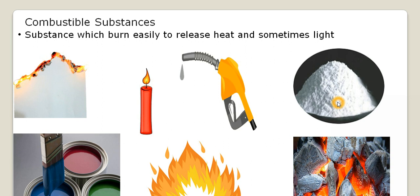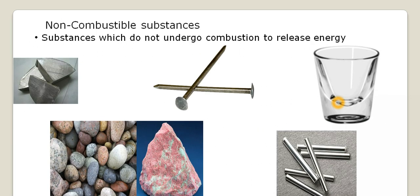On the other hand, we have a set of non-combustible substances which do not undergo combustion to release energy. They will not get burned to release energy. Most metals are non-combustible, like iron nail. It's made of iron metal so it's non-combustible. If you put it on fire, the iron nail doesn't burn. Nothing happens to it. Similarly, if you take example of glass, glass does not burn. You can take the example of steel like a steel spoon, stones, rocks. They are all examples of non-combustible substances.